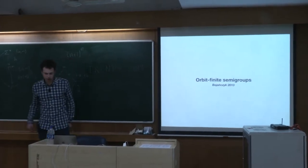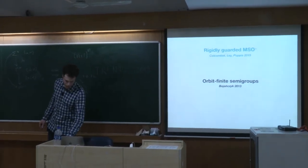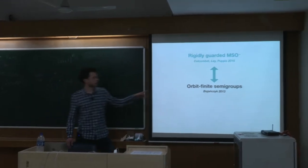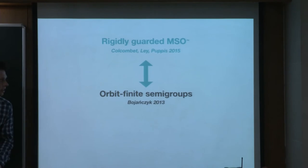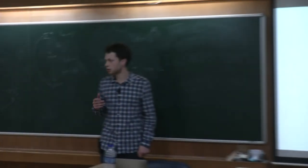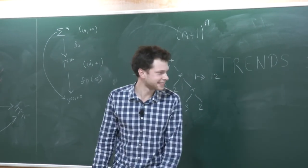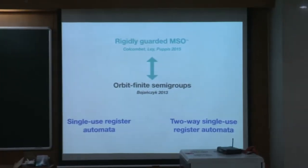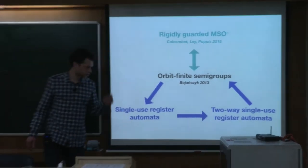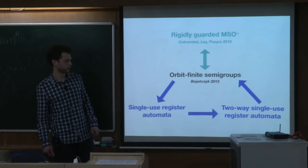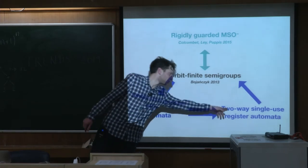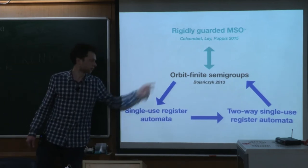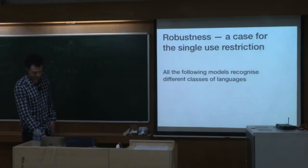This class of languages is recognized by this model and already has two different characterizations: orbit finite semigroups, introduced by Mikoa in 2013, and rigidly guarded MSO with data value comparison, introduced by Colcombet, Gabriel, and Ley. We can also prove that both one-way and two-way single-use register automata are equivalent to this — we can give a translation and it is actually in a paper, so this is not work in progress. The standard construction translating a two-way automaton to orbit finite semigroups is basically the right way of translating, and then we can construct for every orbit finite semigroup a one-way automaton that recognizes the same language.